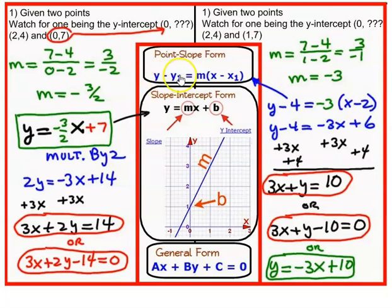That's y minus a particular y equals slope times x minus a particular x. So I'm going to use the 2 and the 4 for x1, y1. So we get y minus 4 equals slope times x minus 2. I'm using the 2 and the 4.